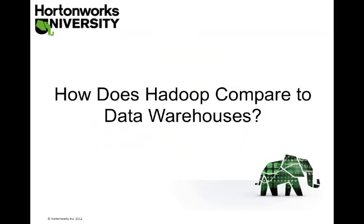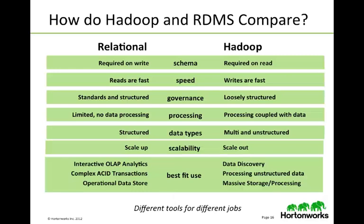When we talk about Hadoop, one common question is: is it a database? No — it's a distributed file system. So how does it compare to a relational database? One fundamental difference is schema. A relational database requires a schema on the write; Hadoop requires it on the read, which means you can store and write all your data into Hadoop without worrying about how you'll use it until you read it. Reads are faster in a relational database, while writes are faster in Hadoop.